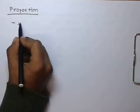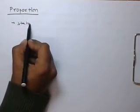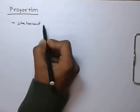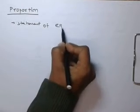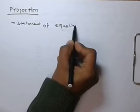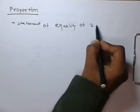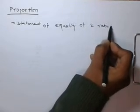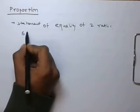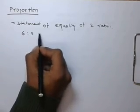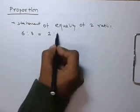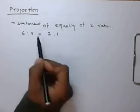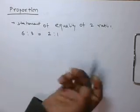A proportion is a statement of equality of two ratios. Like 6 is to 3 equals to 2 is to 1. So, proportion is a statement of equality of two ratios.